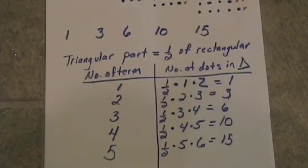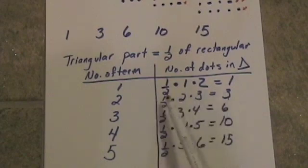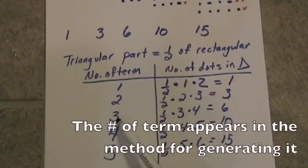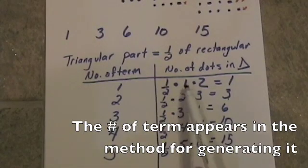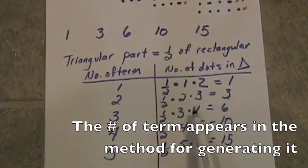So what do we do when there are n terms? We want to find the nth term, the value of the nth term. We've got a pattern happening here. In every single case, the number of term appears in the method for generating it, and it's being multiplied by a number that is one more than the number of term. And then, of course, we're taking a half.